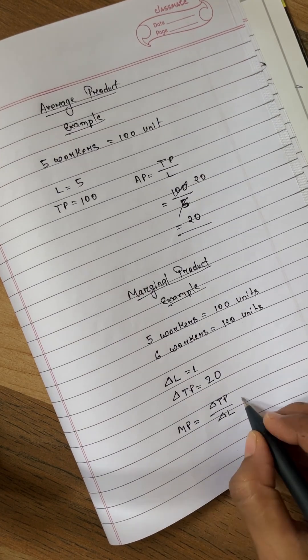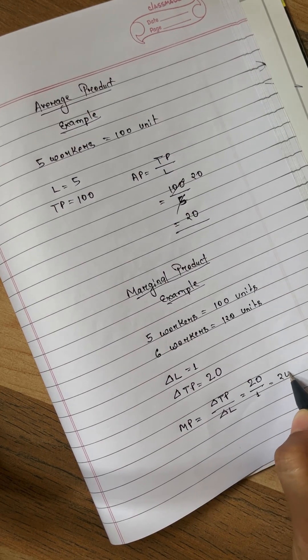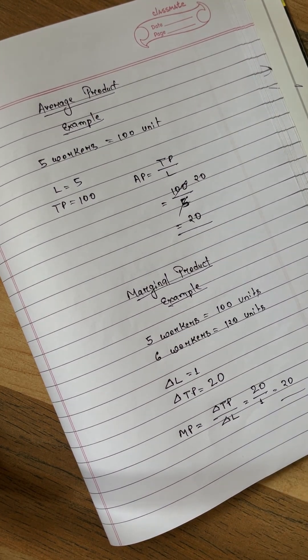Applying the formula MP is equal to delta TP upon delta L. Here delta TP is 20 and delta L is 1 so 20 divided by 1 is 20.